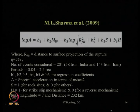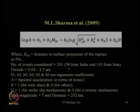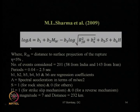Sharma et al. in 2009 proposed an attenuation relationship, but it cannot be considered purely Indian because the data points used to develop this empirical relationship were taken partly from India and partly from Iran — actually more from Iran than from India. So this relationship cannot be said to be completely Indian or applicable only to India.